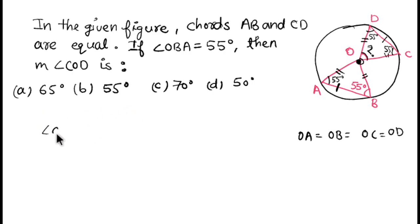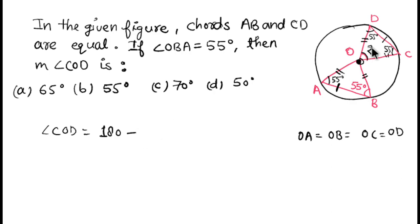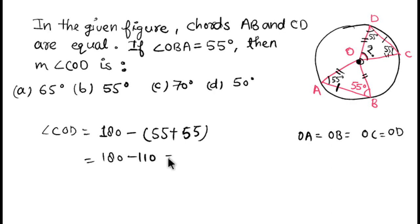We need to find angle COD. Since the two base angles in triangle OCD are 55 degrees and 55 degrees, and the sum of all interior angles of any triangle is 180 degrees, we subtract: angle COD = 180 − 55 − 55 = 70 degrees. So angle COD is 70 degrees, and option C is the correct answer.